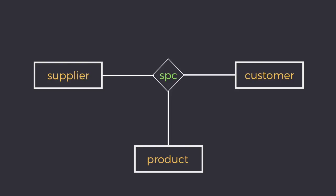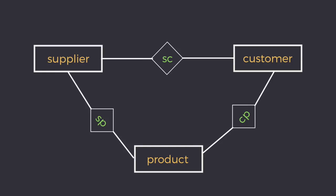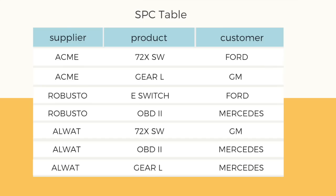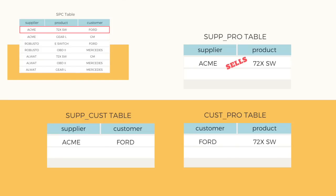If we try to convert the above ER diagram into exclusive binary relationships between attributes, it will look like this. In this ER diagram we have decomposed the initial relationship, or we can say broken down the main table. This can also be seen as the main table with columns supplier, product, and customer being divided into three smaller tables: supplier-product, customer-product, and supplier-customer. Taking the first row of data — Acme, 72x, Fold — this now becomes: Acme sells 72x, Fold uses 72x, and Acme supplies to Fold.